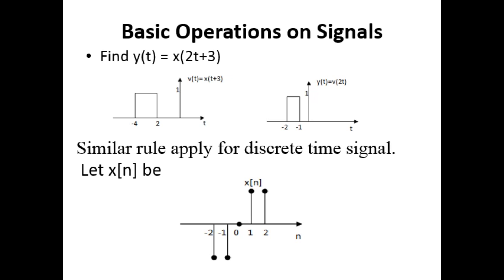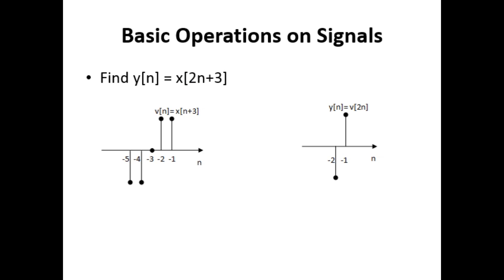A similar rule applies for discrete time signals also. Let h(n) be the given figure. We have to find y(n) = x(2n + 3). First, we find v(n) = x(n + 3), then we find y(n) = v(2n).